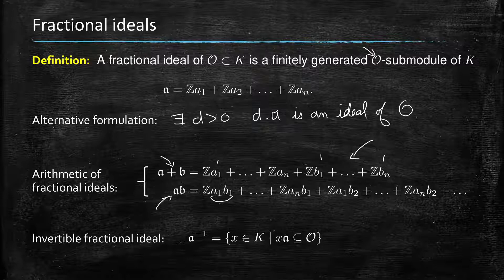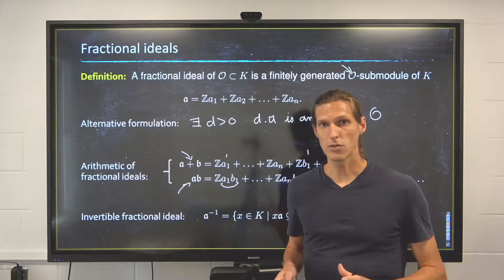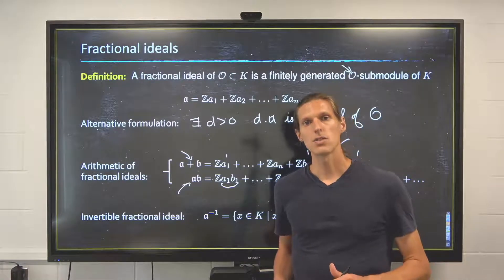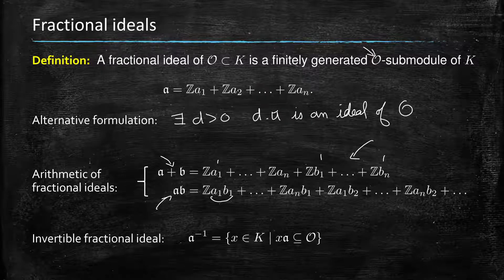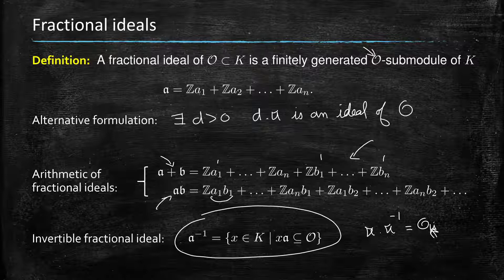One category of fractional ideals that we'll be focusing on when we define the class group is the invertible fractional ideals. For a fractional ideal A to be invertible, this structure has to be well-defined, and when it is, you have A times its inverse equal to just the ring O. So we have a multiplicative group of invertible fractional ideals for the multiplication law defined here.